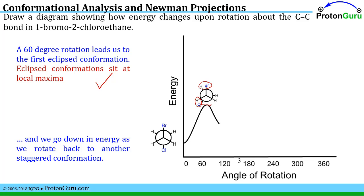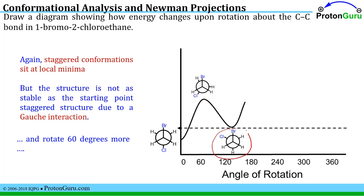Since it's a local maximum, you must go down in energy as you rotate away from that position. We rotate the back carbon so the chlorine moves into the staggered position with respect to the front groups, giving us the next staggered conformation — a local minimum. But it's very important not to put that energy as low as the starting point, because now we have a little bit of repulsion due to the gauche interaction between the bromine and chlorine. So although it's still a local minimum, it's not quite as low in energy or as stable as our starting structure.